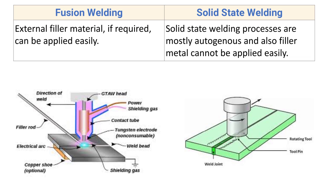Next point: in fusion welding, external filler material can be applied if required. On the basis of filler application, welding processes are classified into three categories: autogenous welding (no external filler), homogeneous welding (filler composition compatible with the parent metal), and heterogeneous welding (filler composition substantially different from the base metal). In fusion welding, filler material is applied when the root gap between the components is large.